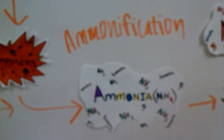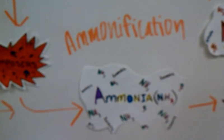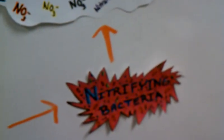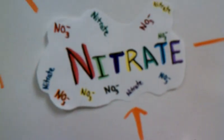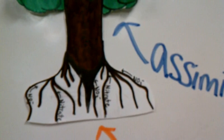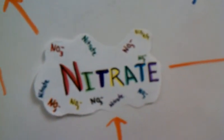The ammonia is turned into nitrate through the nitrifying bacteria that live in the soil. The nitrifying bacteria turn it into nitrate, which can either be taken up through the roots of a tree or any plant through assimilation.